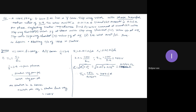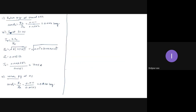Fifth point: external rotor resistance per phase required to obtain a starting current of 100 amperes in the stator. If the stator current is 100 amperes, we need to find the corresponding rotor current using the transformation ratio, since all calculations are done on the rotor side.